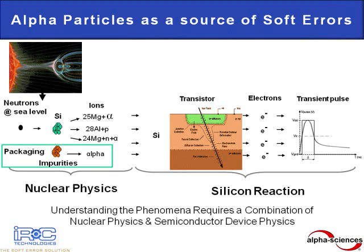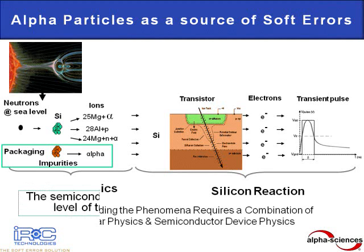An alpha particle, regardless of its origin, can cause what is known as a single-event upset, or soft error, in many of today's semiconductor designs. A high-energy alpha particle can penetrate silicon devices to a depth of nearly 25 microns. As it passes through the silicon, it creates a track along which electrons are dislodged from the crystal lattice sites. If these electrons are collected by an empty storage well in the cell, it can cause the cell to flip its binary state from a one to a zero, generating the soft error.